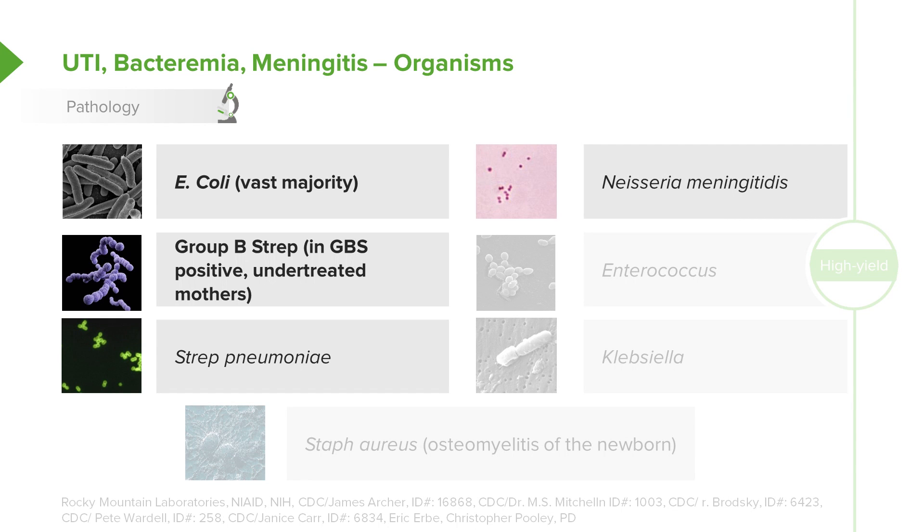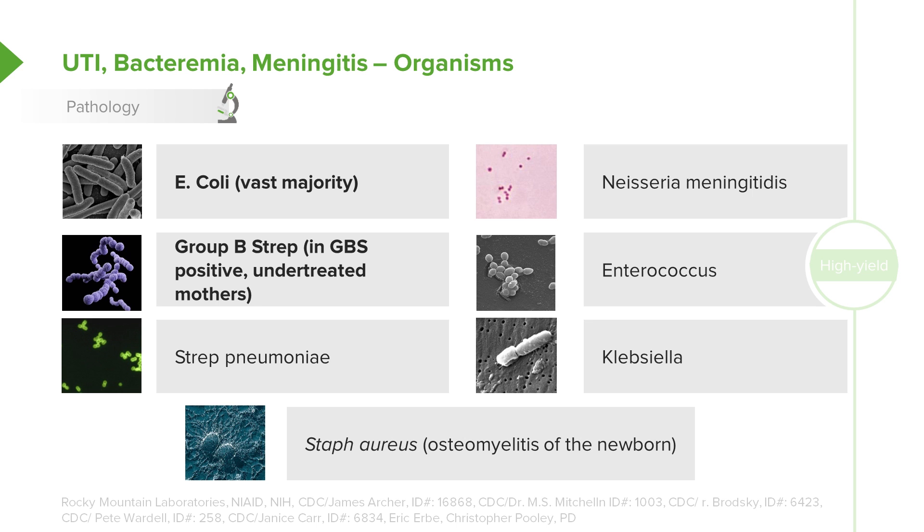Likewise, Neisseria meningitidis is incredibly rare to get as a result of the birthing process, but it can rarely happen. Klebsiella is more of a fecal organism. And we're seeing more and more Staph aureus in these newborns. As we're seeing more aggressive Staph aureus types like MRSA or resistant Staph aureus, we are seeing it now and then, and there can sometimes be outbreaks in newborn nurseries.